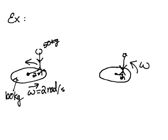If the kid is walking inwards, they are exerting a force towards the center of the merry-go-round. That force won't contribute to torque because the angle between the radius and the force is 180 degrees. It's also an internal force. So because there's no net external torque, we know sigma L-naught equals sigma L — angular momentum is conserved.